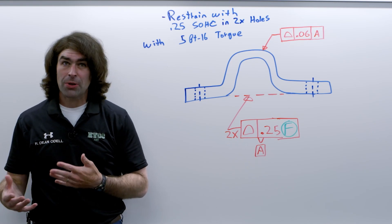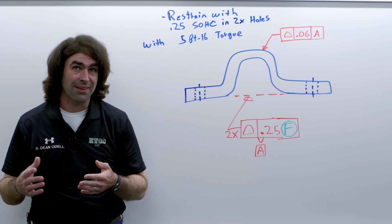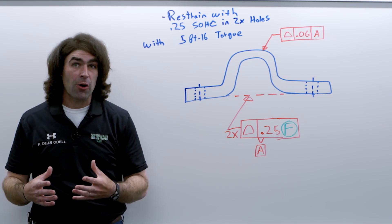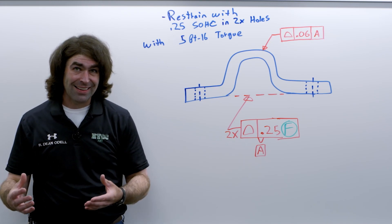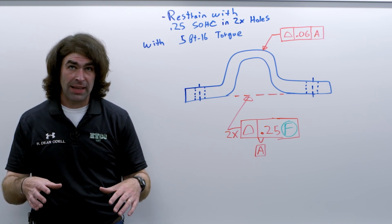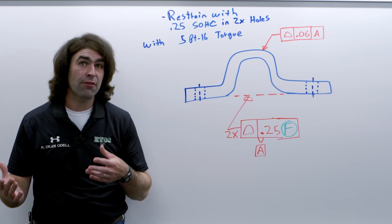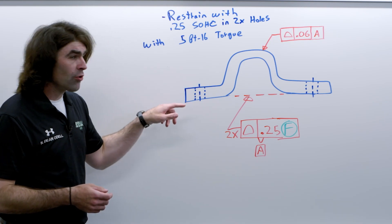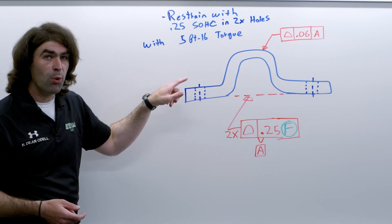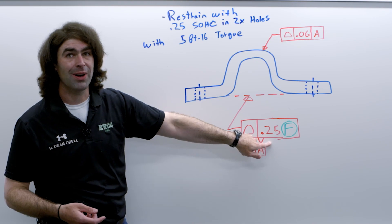Typically this is just used for parts that might flex on you — sheet metal parts where you know at assembly you're going to have enough force to bend the part back into position. So there's no need for manufacturing to stress about keeping these two surfaces more coplanar than this large tolerance number right here.